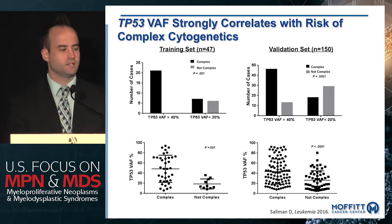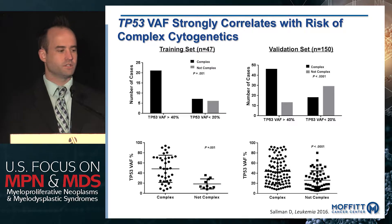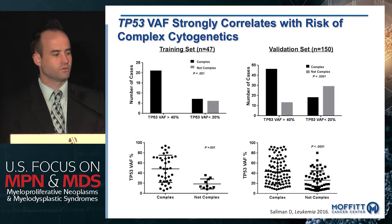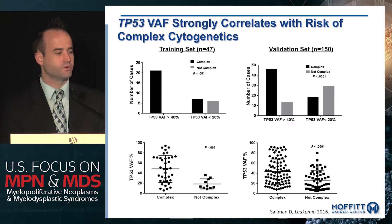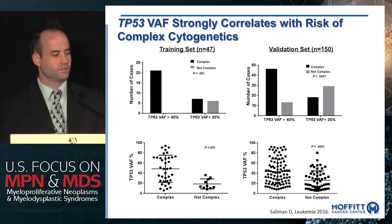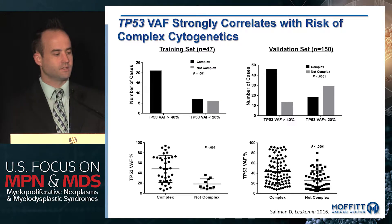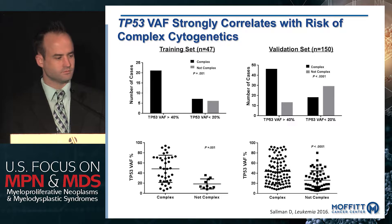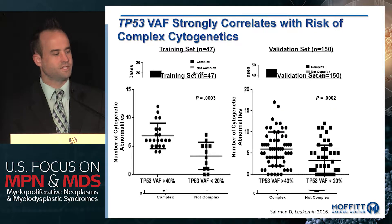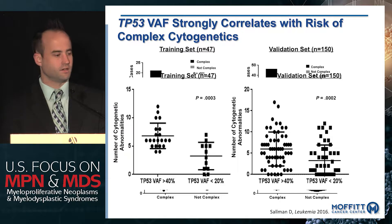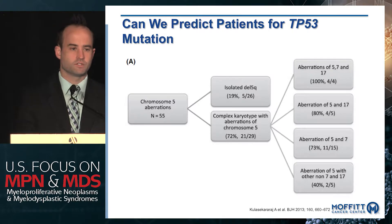The VAF of p53 is strikingly concordant with complex cytogenetics: around 80 to 100% of patients with a VAF greater than 40% have complex cytogenetics, compared to about half with lower VAF. The median allele burden in patients with complex cytogenetics is significantly higher in both our cohort and a validation set. The total number of cytogenetic abnormalities is directly dependent on the allele burden of p53.